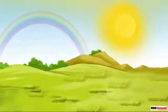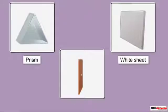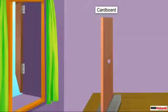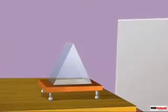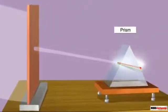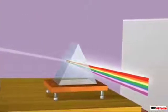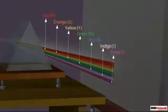For an activity, take a prism, a cardboard with a hole, and a white screen. Place the cardboard in the direction of sunlight so rays pass through the hole onto the prism. Place the white screen on the other side. The sunlight passes through the hole, falls on the prism, and we can observe a band of colors forming on the white screen.